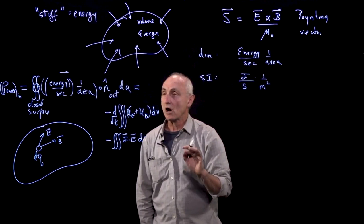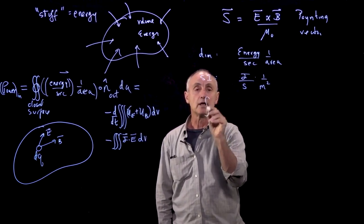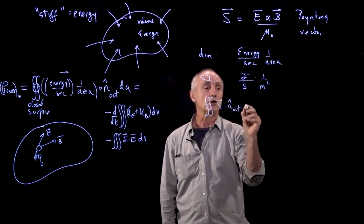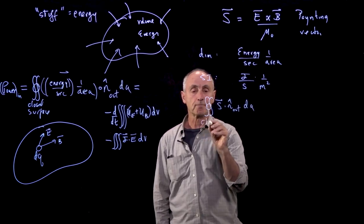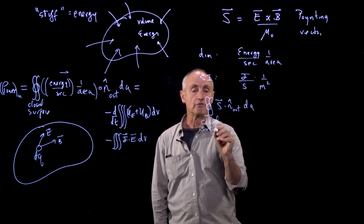And so our energy conservation statement, and I will just write it out, is that the flux of the Poynting vector through a closed surface represents the power that flows in or out of the closed surface.